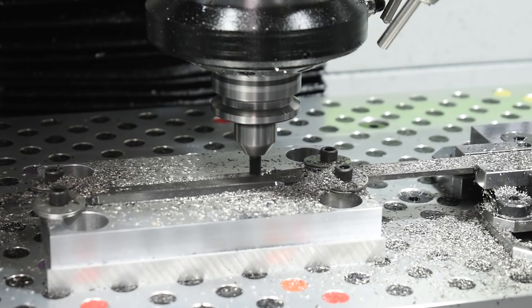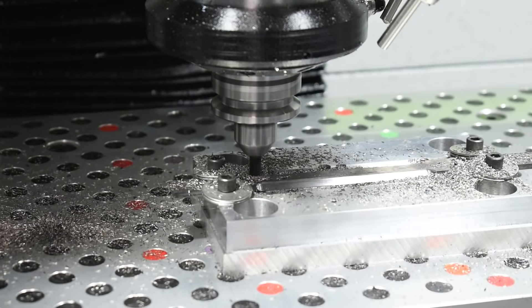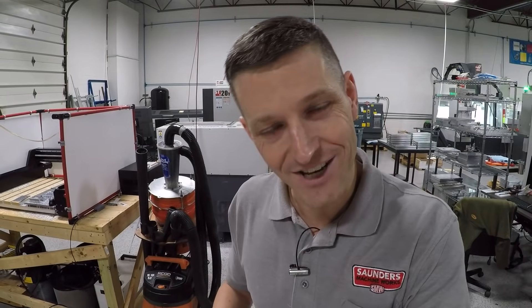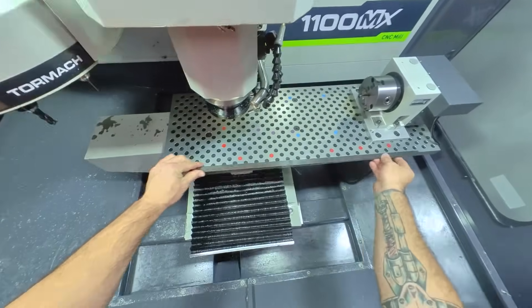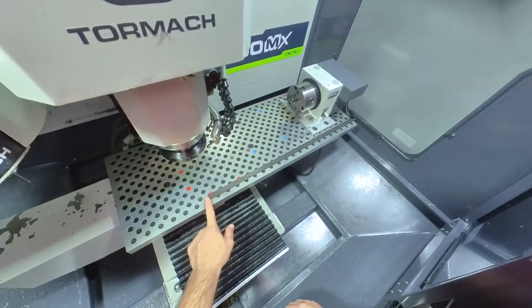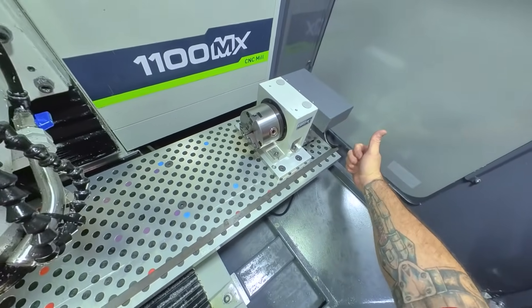What's cool about this project isn't just showing how to machine hardened steel with a regular carbide end mill, but also the fixtures. So sit back, relax, and enjoy. Alright, so we received the material back from heat treating. Luckily, I didn't have to remove one of the windows, and I didn't have to do anything special. Everything was going to fit just perfect.